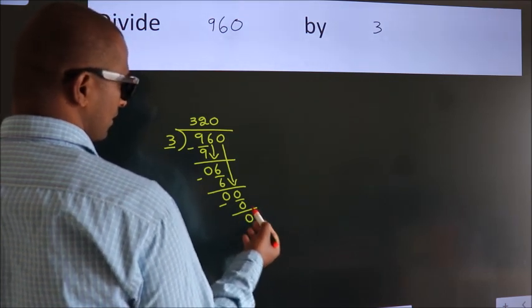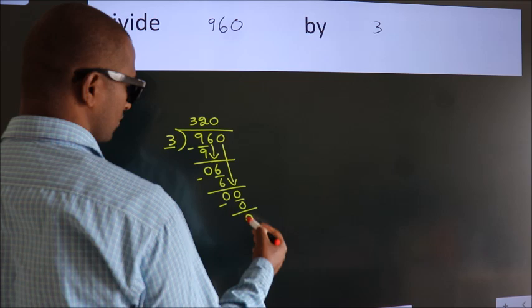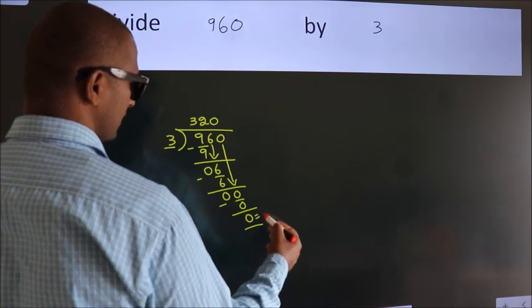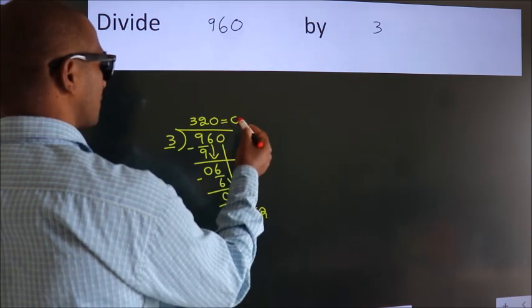After this, no more numbers to bring it down. So we stop here. This is our remainder. This is our quotient.